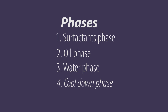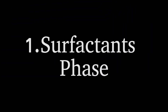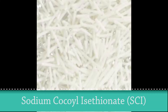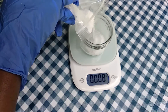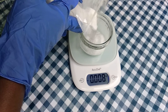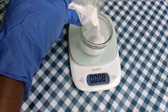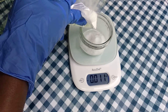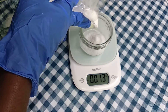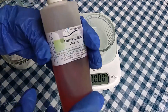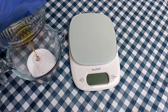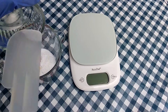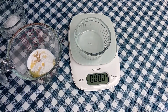In the surfactants phase I use extremely gentle and naturally derived surfactants. The first ingredient is sodium cocoyl isethionate, which is commonly known as baby foam because it is an extremely gentle surfactant and it is made from coconut oil. The other ingredient is foaming silk, made from hydrolyzed pure silk fibers, and it is perfect for mild cleansing.